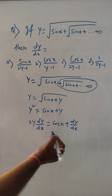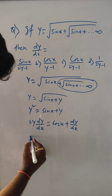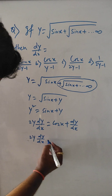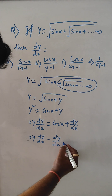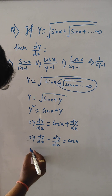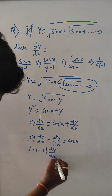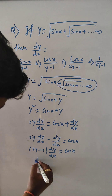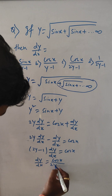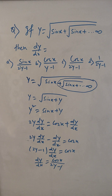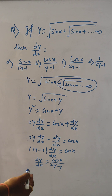Now we can take this one to this side. Then 2y dy by dx minus dy by dx equals cos x. So we can take dy by dx common, and we get dy by dx times (2y minus 1) equals cos x, so dy by dx equals cos x divided by 2y minus 1.